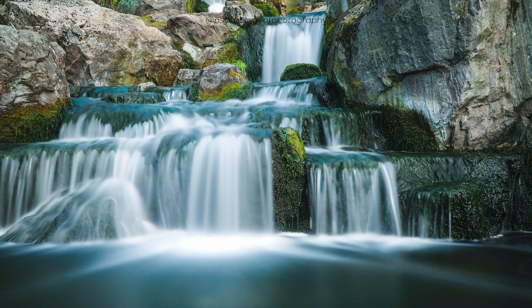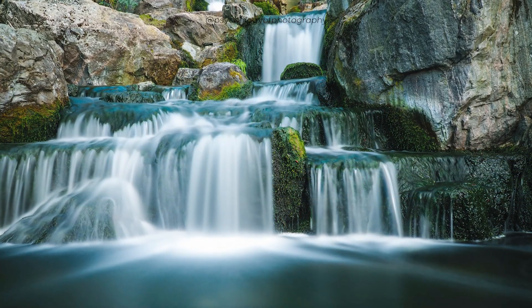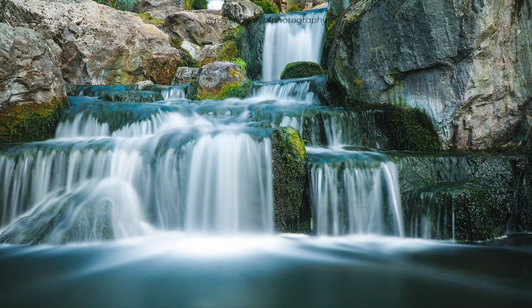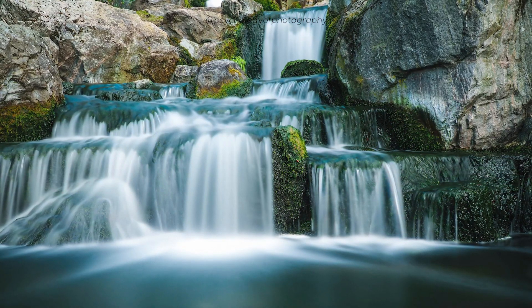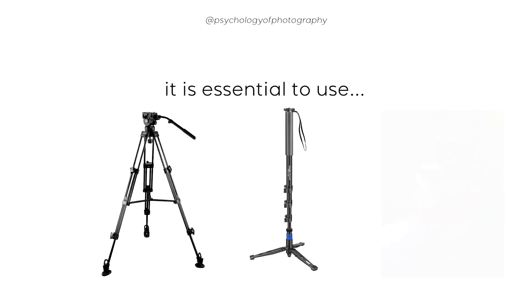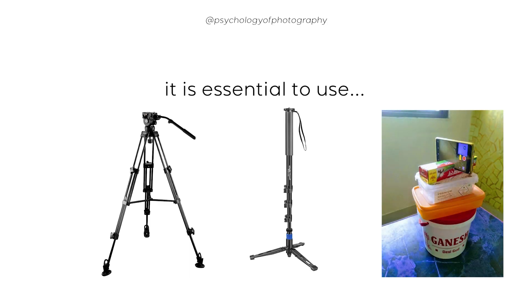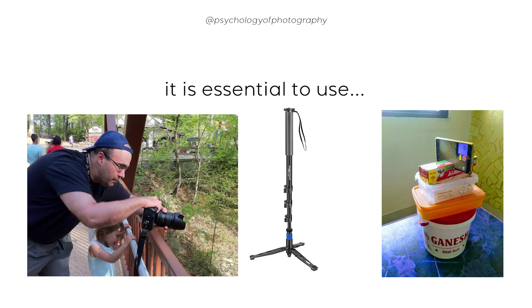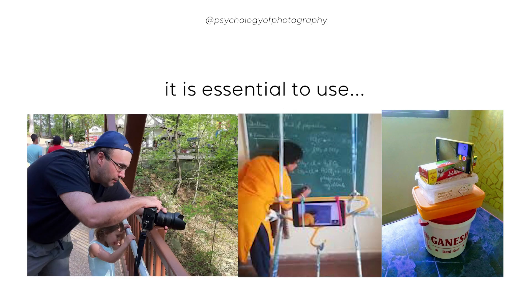On the other hand, if you are shooting a waterfall, you'll want to use a slow shutter speed to create a sense of movement and motion in the image. It's important to keep in mind that when using a slow shutter speed, it's essential to use a tripod or some other form of support to steady the camera, as even the slightest movement can cause camera shake and blur the image.